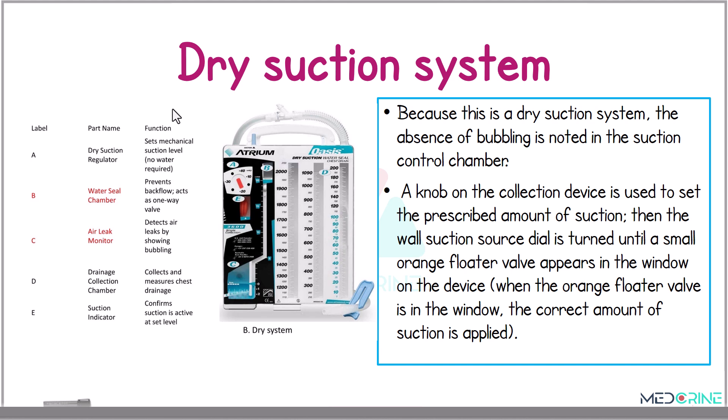There are two types of suction systems: wet suction and dry suction. The one we looked at earlier is a wet suction system. In a dry suction system, the absence of bubbling is noted in the suction control chamber. A knob on the collection device is used to set the prescribed amount of suction, and the wall suction source dial is turned on until a small orange floater valve appears in the window on the device. When this floater valve appears, it means the correct amount of suction has been applied.